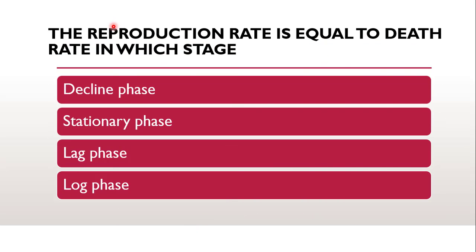Next question: the reproduction rate is equal to death rate in which stage — decline stage, stationary phase, lag phase, or log phase? The correct answer is stationary phase. As the name suggests, in stationary phase the reproduction rate equals the death rate. Due to nutrient depletion and waste product accumulation, growth reaches a plateau wherein cell division equals cell death. In this stage, spore-forming bacteria produce endospores and pathogenic bacteria responsible for various diseases are present.